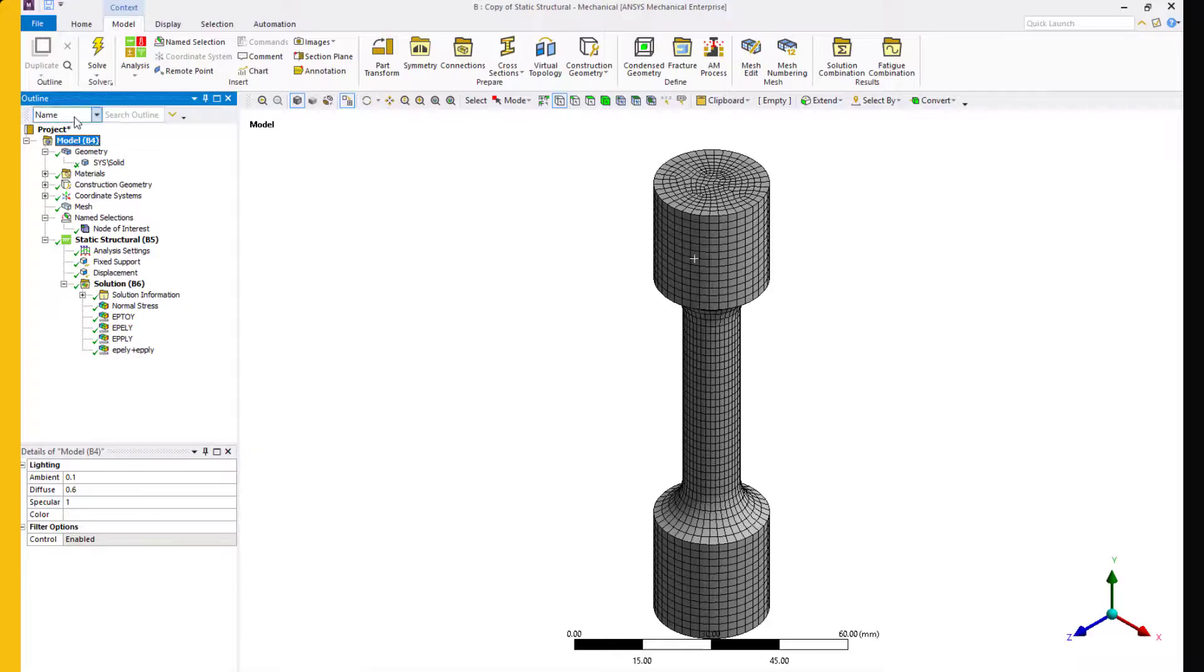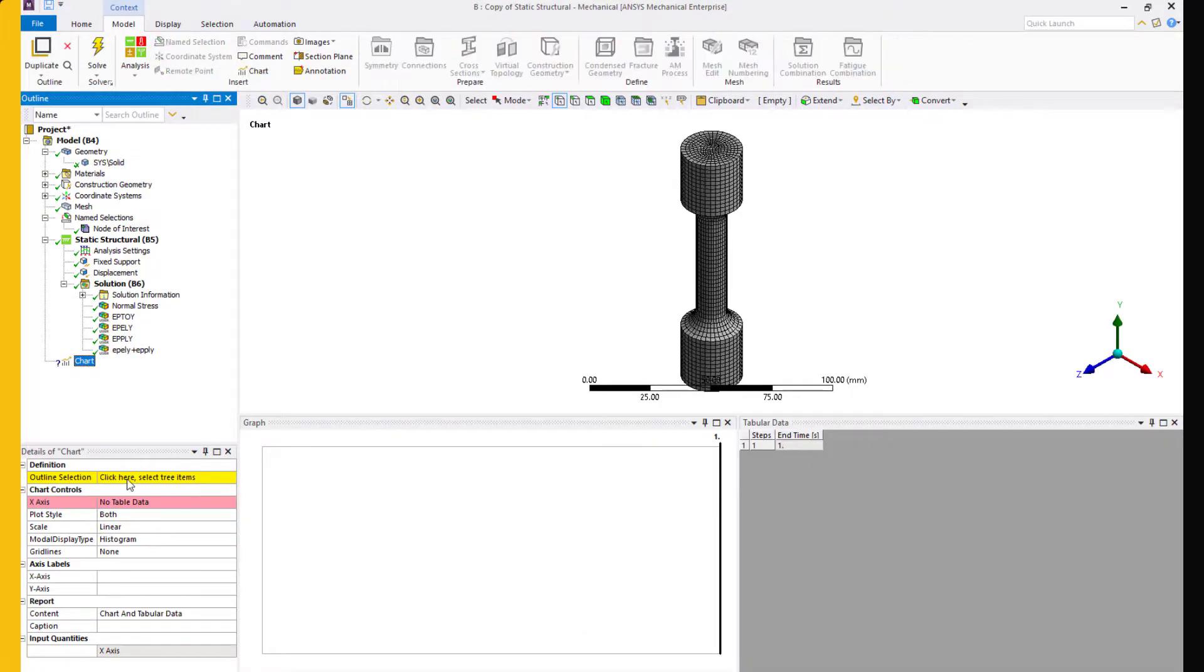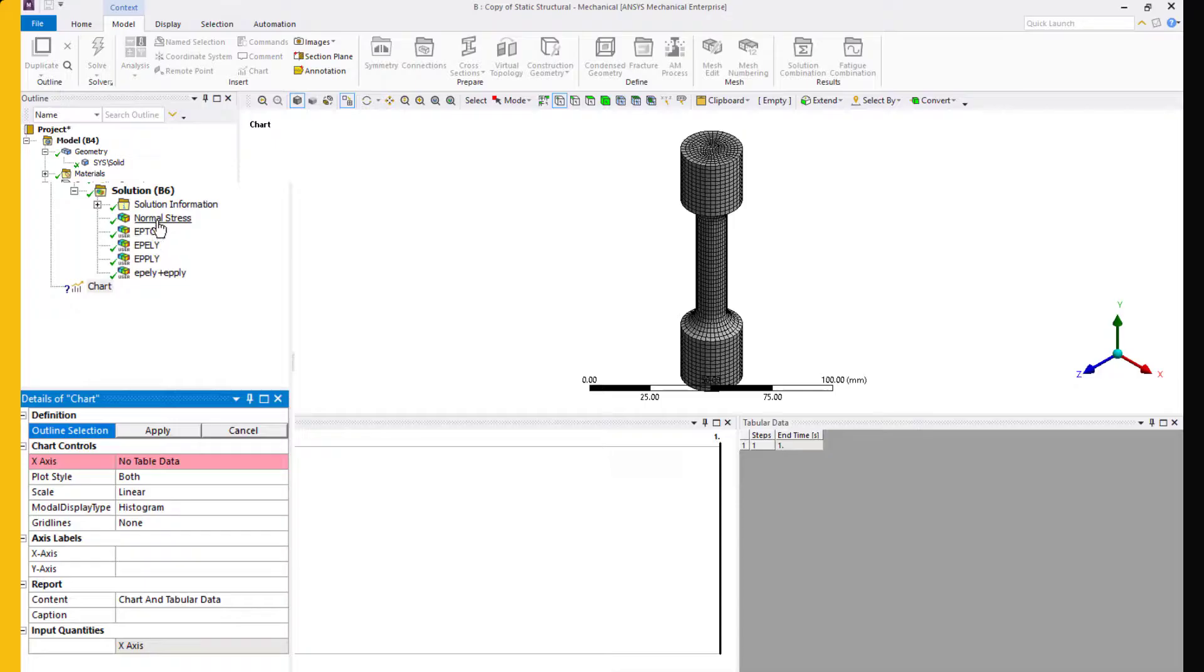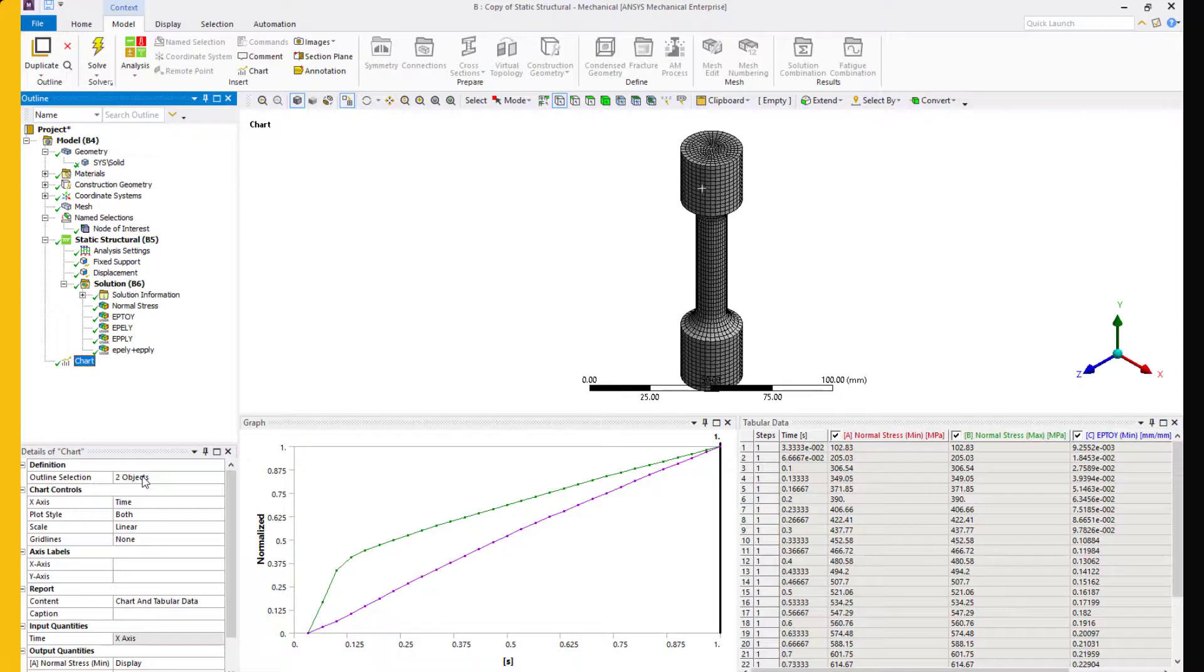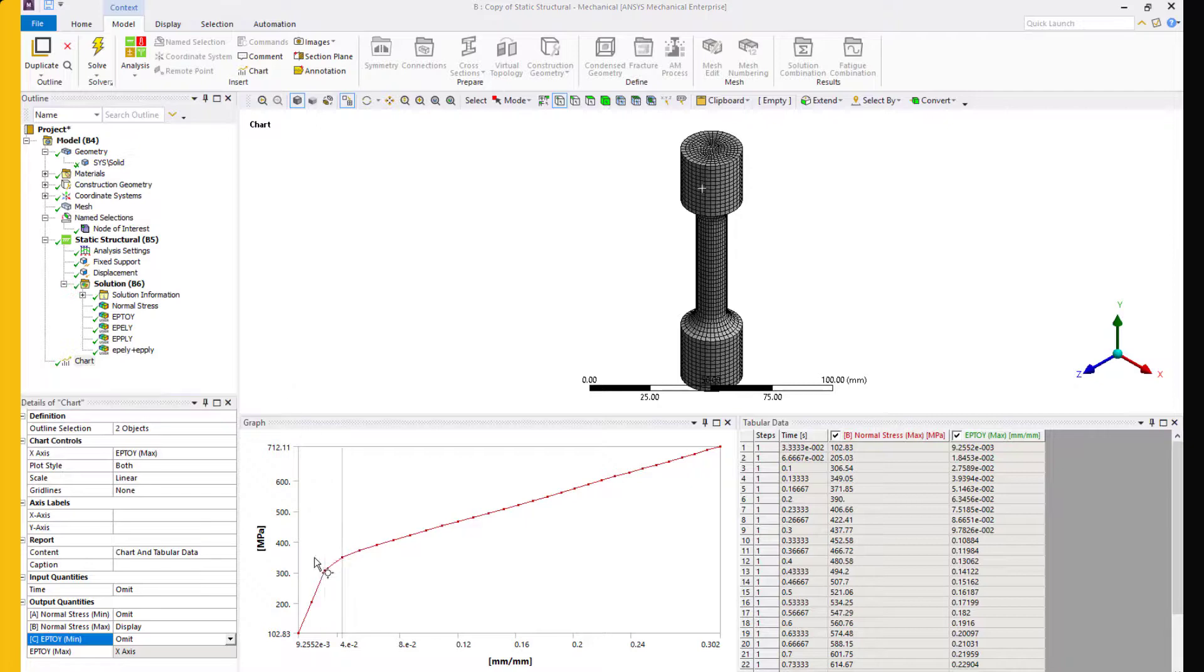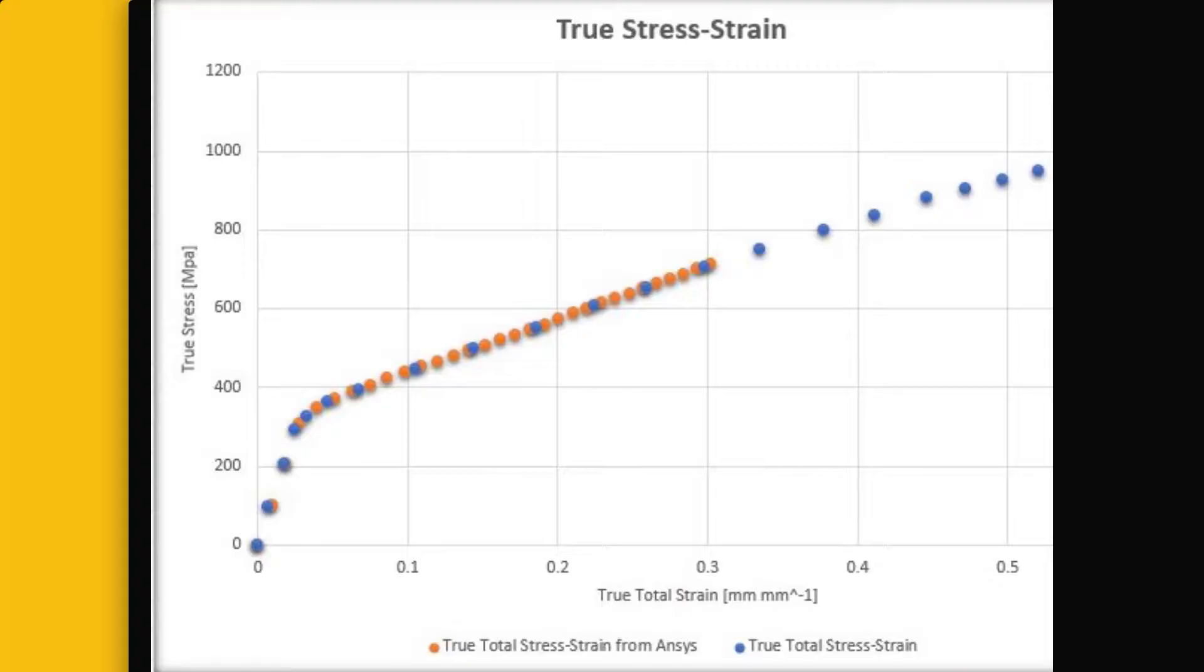Finally, let's plot the normal stress as well as total normal strain at the node location. Select these two objects and insert a chart feature. Change the x-axis to maximum total strain and y-axis to maximum normal stress in Y. Now, let's plot this data against the experimental data we used. The simulated data correlates very well with the data we prepared for the input into engineering data. This serves as a verification to our input.